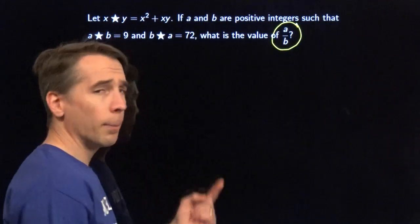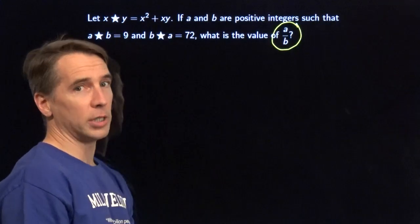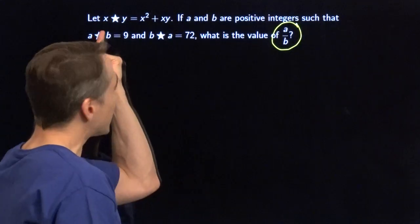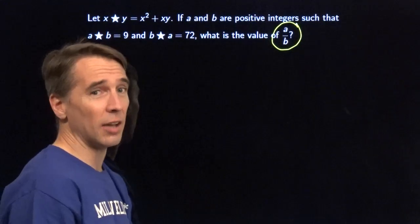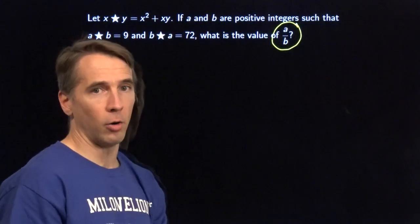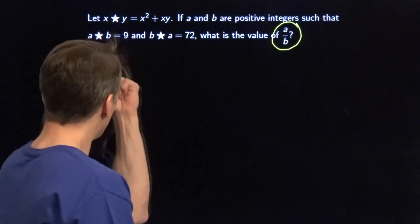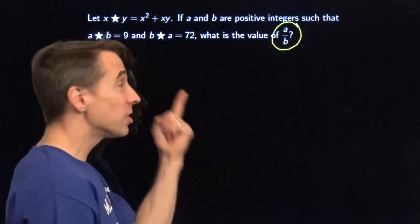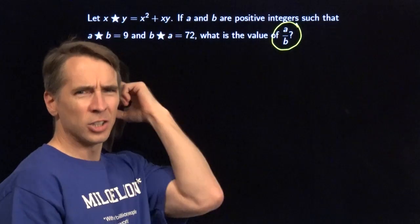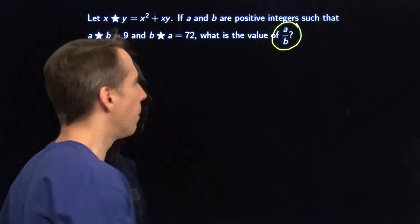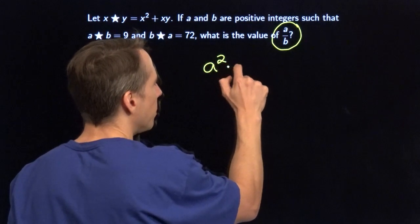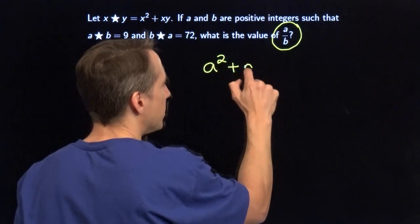We take this a★b and use our definition. The a comes before the star just like the x does in our definition, so we put a where the x's are. The b comes after the star like the y does, so b goes in for y. So a★b is a squared plus a times b.